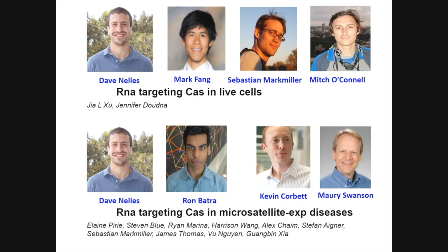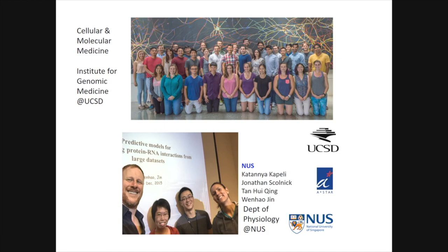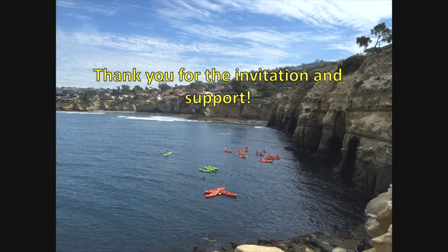The first paper I mentioned was the first RNA targeting of Cas in live cells in Jennifer's lab, and then a demonstration that we can do this in microsatellite expansion diseases as a proof of concept. This is together with Molly Swanson, who is an expert in DM, and two postdocs in my lab, Dave and Ron, who worked on this project. Now both Dave and Ron are full time in Locana, trying to push this to people. I'm happy to take questions. Thank you very much to my lab at UCSD and for the invitation.